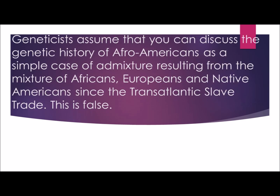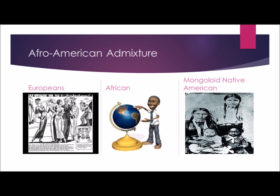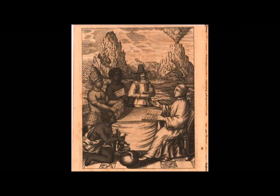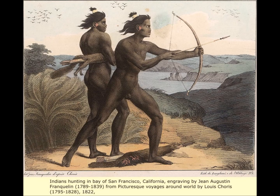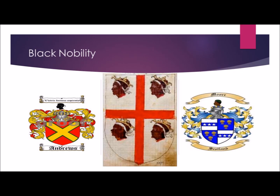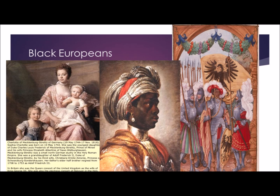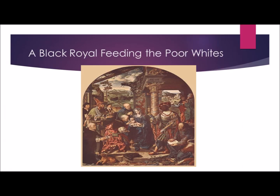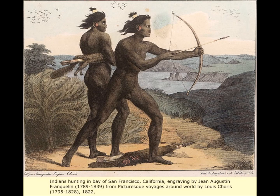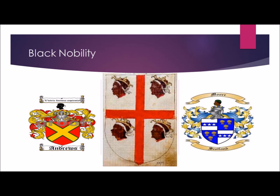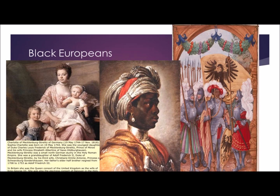Geneticists assume that you can discuss the genetic history of Afro-Americans and Africans as a simple case of admixture resulting from the mixture of Africans, Europeans, and Native Americans since the transatlantic slave trade. This is false. These studies are false because Africans and Negroes have been in contact with Native Americans and Europeans for thousands of years. As a result, the ancestry of Afro-Americans cannot be neatly represented in a structure or admixture bar plot.